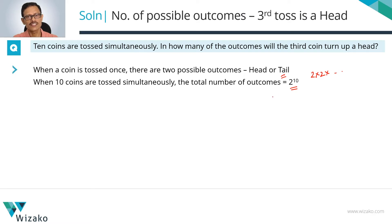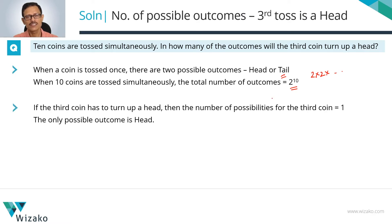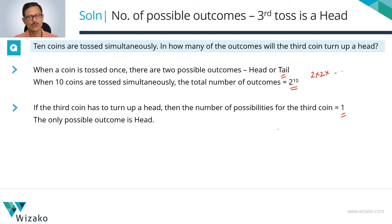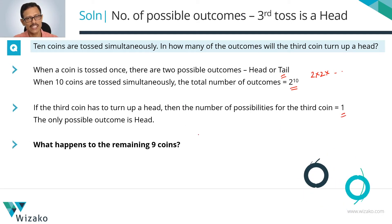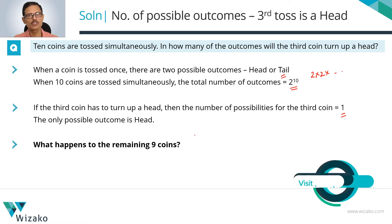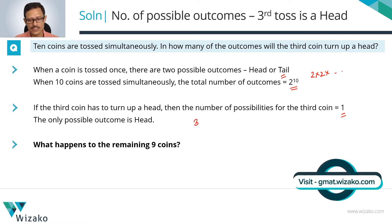Now the question says the third coin turns up a head. It actually no longer has two possibilities — it has to turn out to be a head, meaning it has only one possible outcome. What about the remaining nine coins? Each one of those nine coins will have two possible outcomes. The third one is fixed as a head.